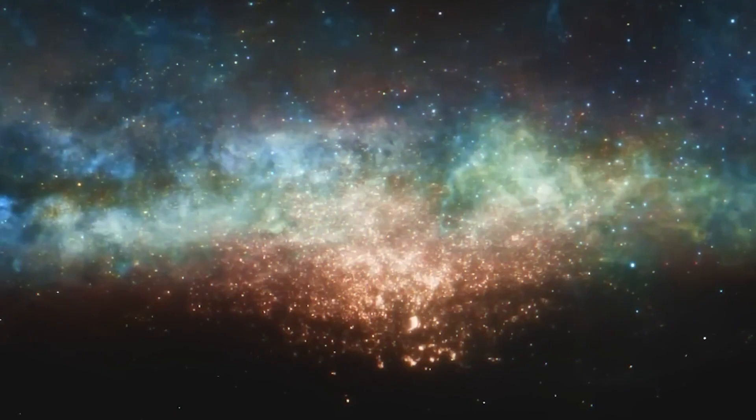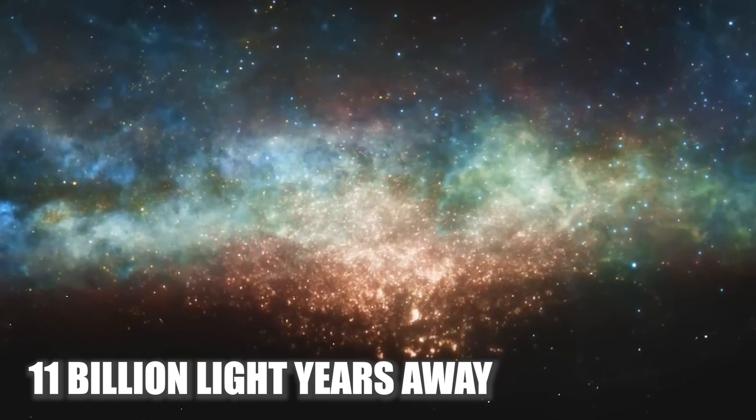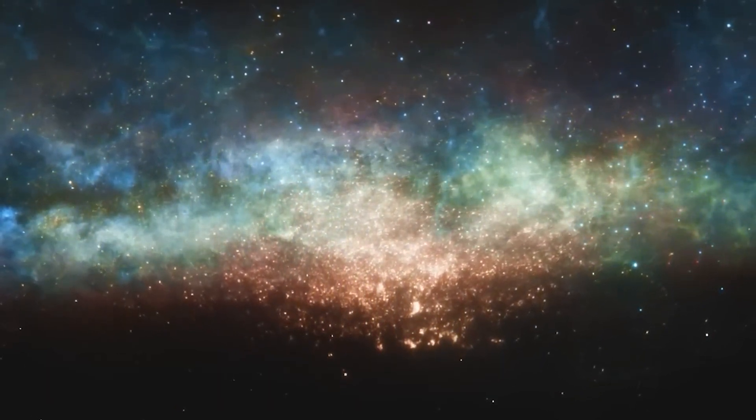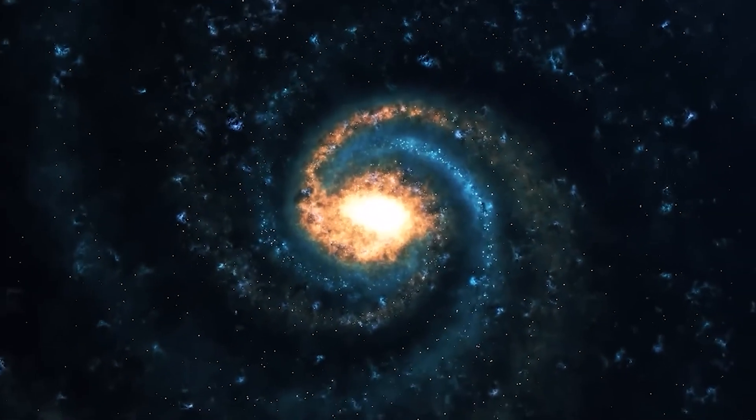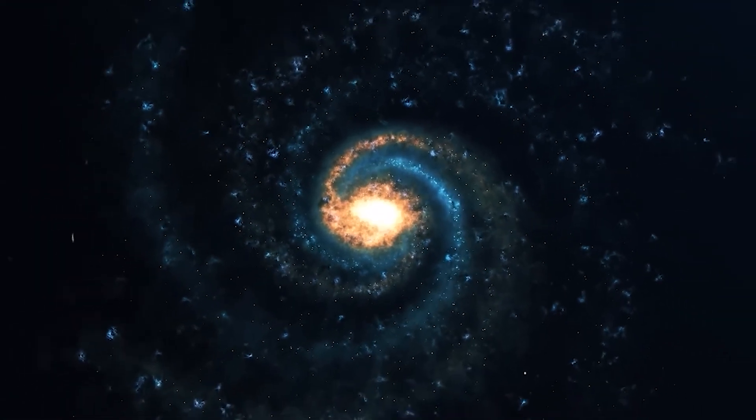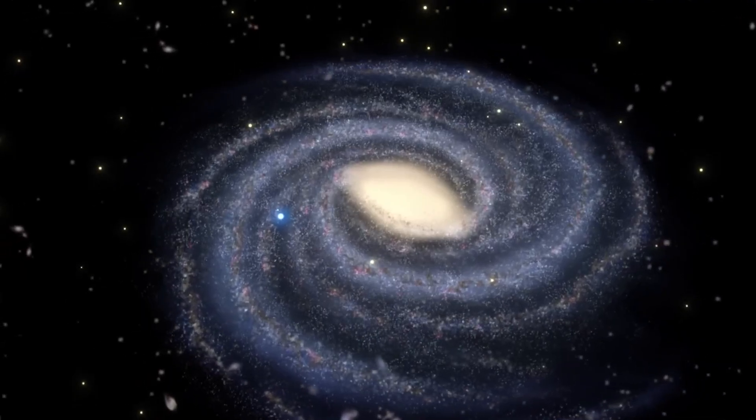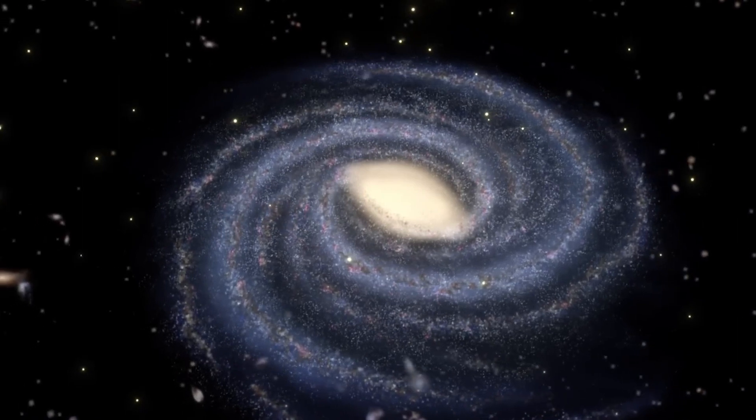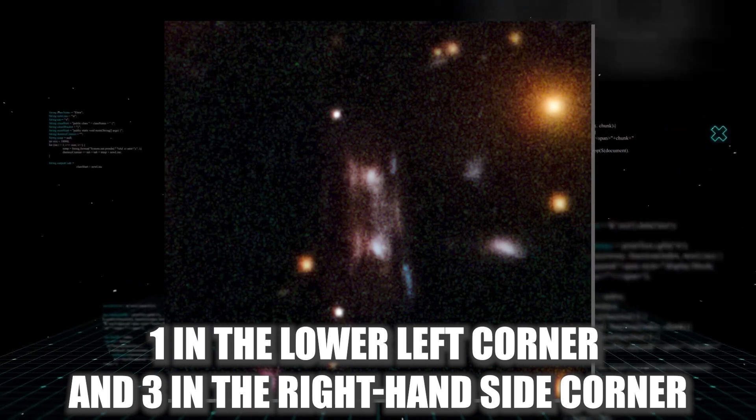Here, the galaxy appeared multiple times in the image. This occurrence was named the Sunburst Arc. Around 11 billion light years away, the Sunburst Arc galaxy is one singular galaxy whose duplicate or mirror image is captured multiple times due to the massive strength of gravitational lensing. This caused four clear light arcs to be formed, one in the lower left corner and three in the right-hand side corner.